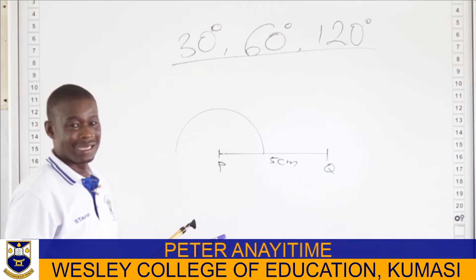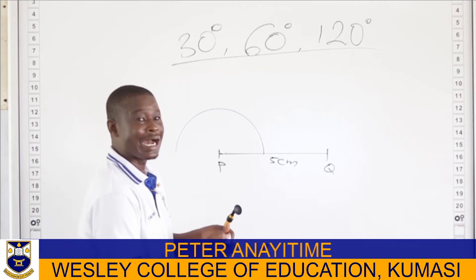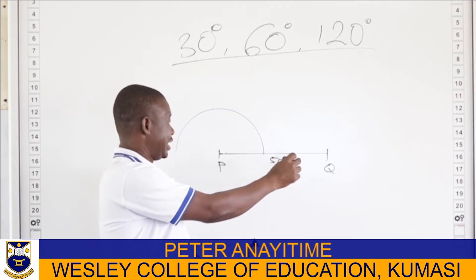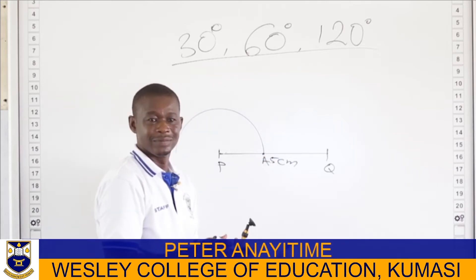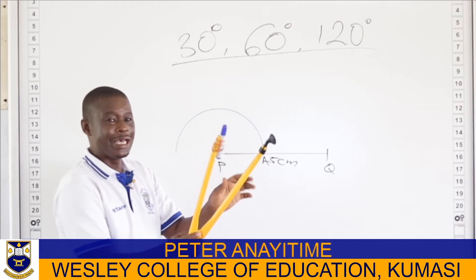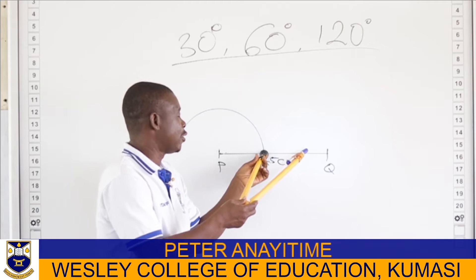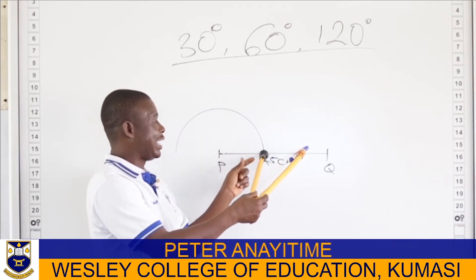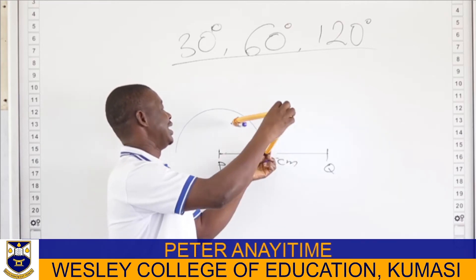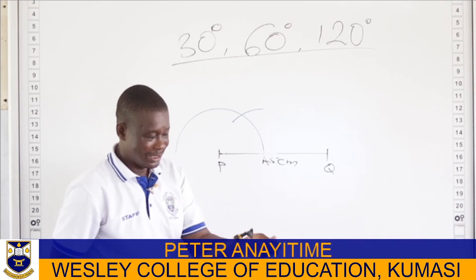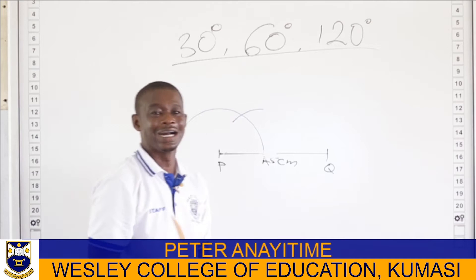I have this arc. Now the arc intersects with the line segment at a point — let me call that point A. With the same length of the compass, I put the tip of the compass at A, where the line and the curve intersect, then I describe another arc.